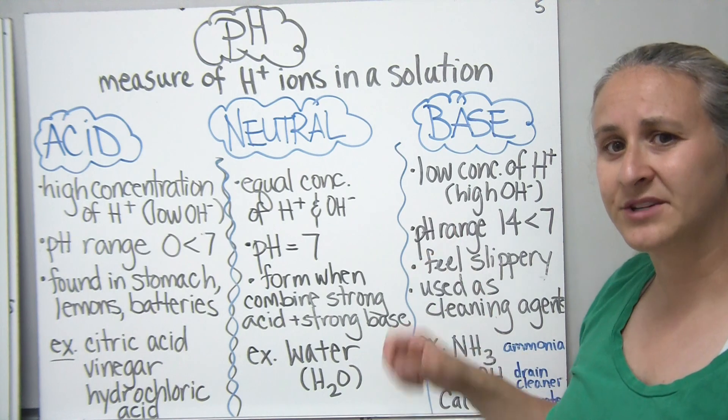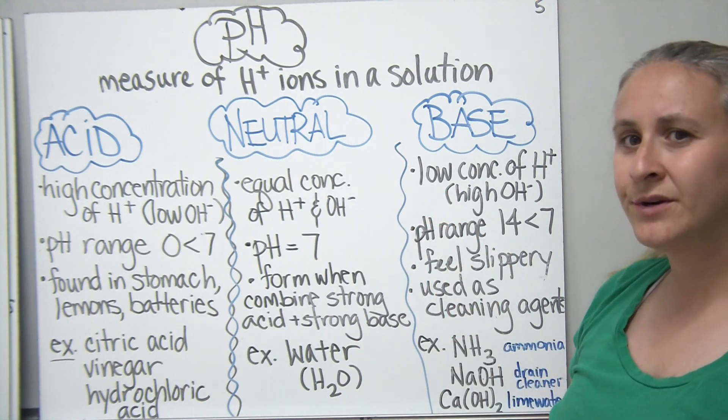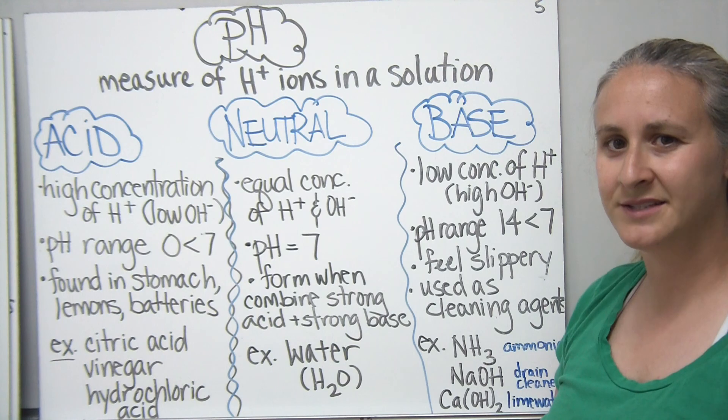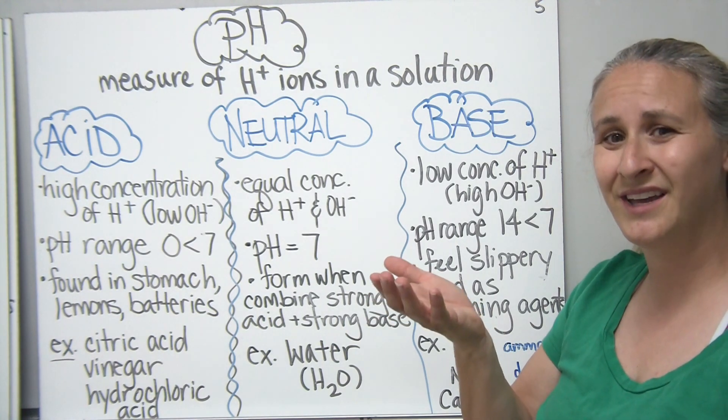On the other end of the spectrum, we have our bases. And bases have a low concentration of hydrogen ions and they typically are known to have a high concentration of those OH minus ions or hydroxide ions we call them.